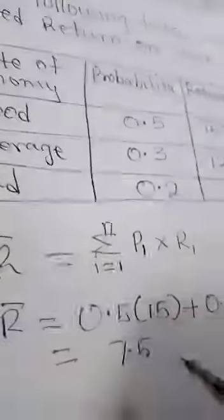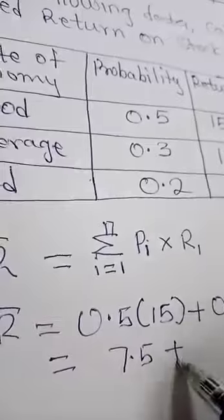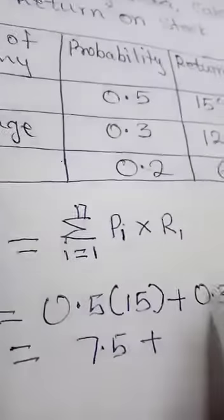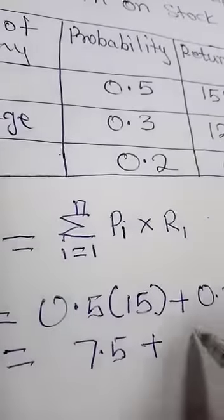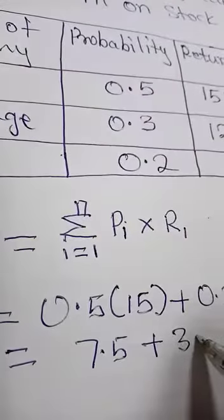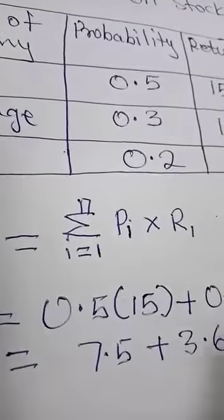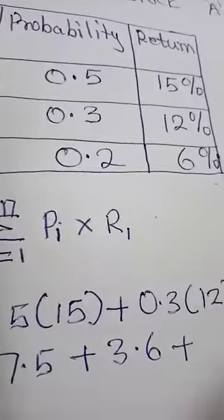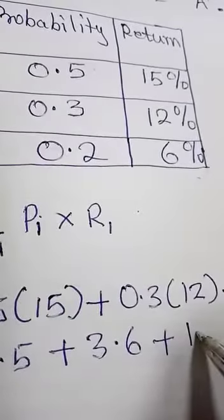Now, when you sum all this, you will have 7.5, plus 0.3 times 12 is 3.6, plus 0.2 times 6 is 1.2.